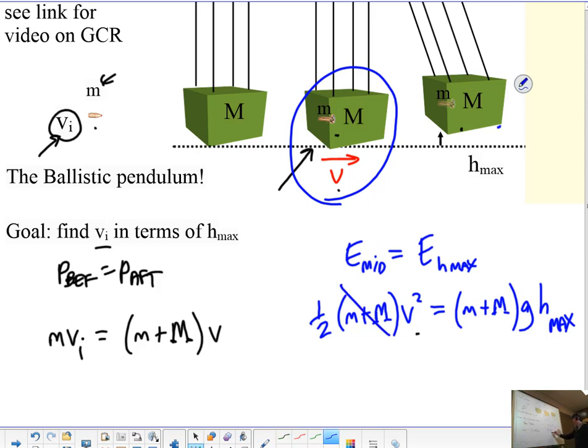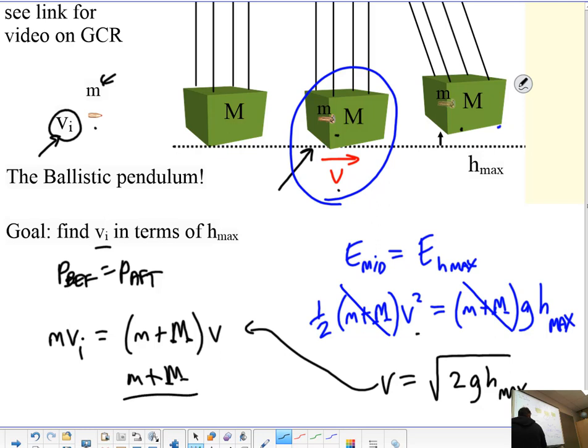And the masses cancel, just like they do when we've done this before. And I'll get velocity equals square root of 2gh max. And then we're going to bring that over here. And so I'm going to divide both sides by the little m. And so I'll get little m plus big M over little m, here's my vi, and then times that. And that's it.